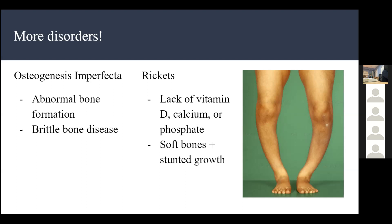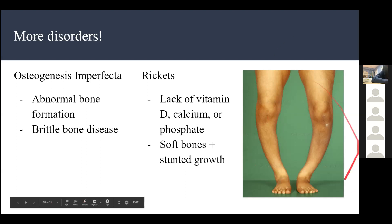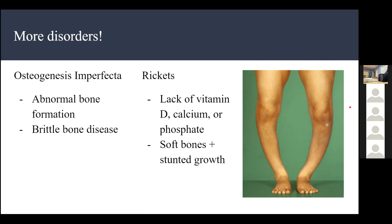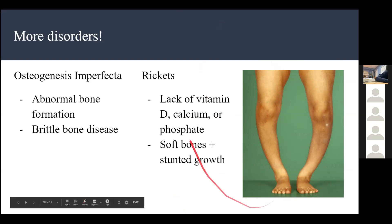Rickets is caused by a lack of vitamin D, calcium, or phosphate. It's more common in young children, who are most affected by nutritional deficiencies. This leads to soft bones and stunted growth. Without enough vitamin D, bones start to bend, which can cause legs to bow outward, as seen in pictures.